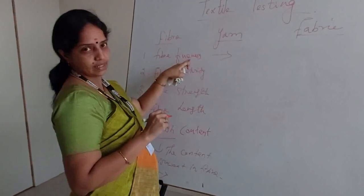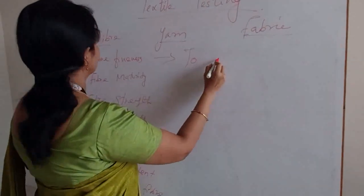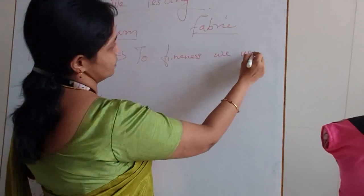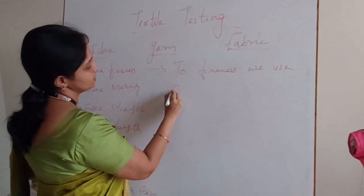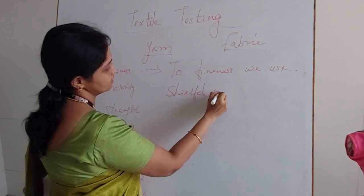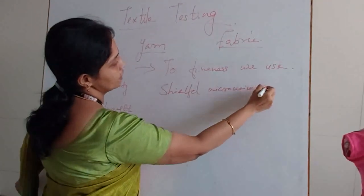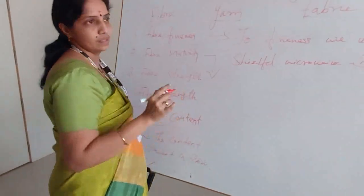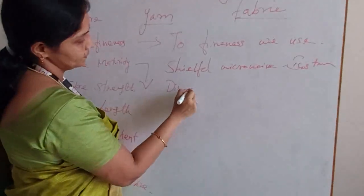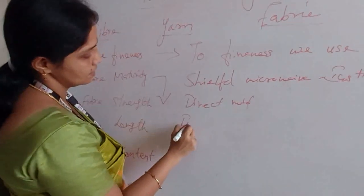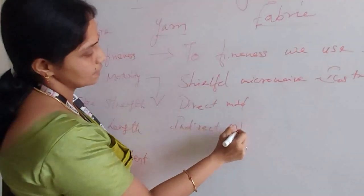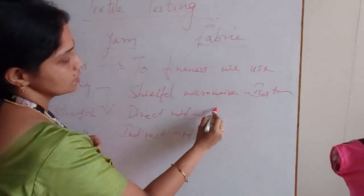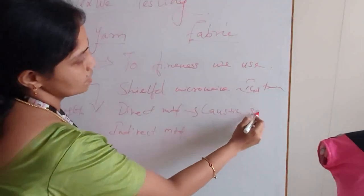First, for fiber fineness — to identify the fineness of the fiber, we use the Sheffield Micronaire instrument. Then, to identify the maturity of the fiber, we have two different methods: one is the direct method and another one is the indirect method. These are the two methods used to identify the maturity of the particular fiber.